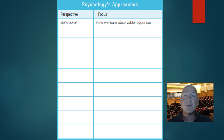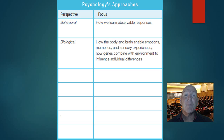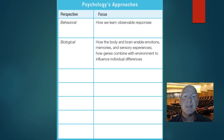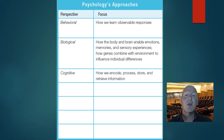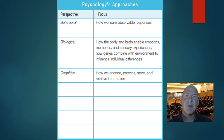A biological perspective is how the body and brain enable your emotions — how your genes have combined from your parents with the environment to create all the differences we may have as individuals. A cognitive perspective is thinking: how we encode, process, store, and retrieve information. It's our thought processes — that would be a cognitive approach.